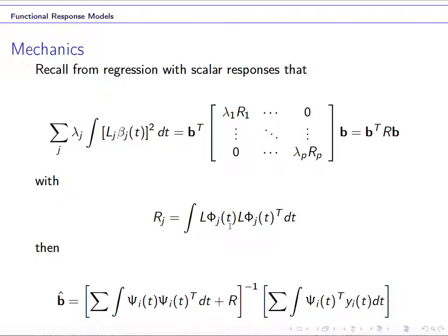So you can see here, for given basic functions, if you define the L, for example, as a second derivative, you should be able to calculate the second derivative of the basic functions, and then you can calculate this rj, this penalty matrix. So in other words, r is known.